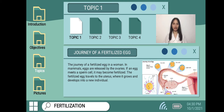Now let's proceed to the journey of fertilization. In mammals, eggs are released by the ovaries. If an egg meets a sperm cell, it may become fertilized. The fertilized egg travels to the uterus, where it grows and develops into a new individual. Fertilization usually takes place in the fallopian tube that links an ovary to the uterus. If the fertilized egg successfully travels down the fallopian tube and implants in the uterus, an embryo starts growing.